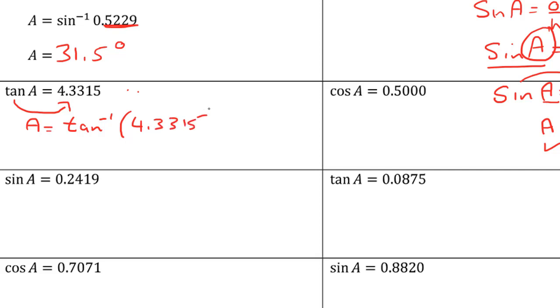Remember from SOHCAHTOA, tan of an angle, in this case A, equals opposite over adjacent. So that means the length of the opposite side over the length of the adjacent side equals the tangent of angle A. We figured out already that angle A is 77.0 degrees.